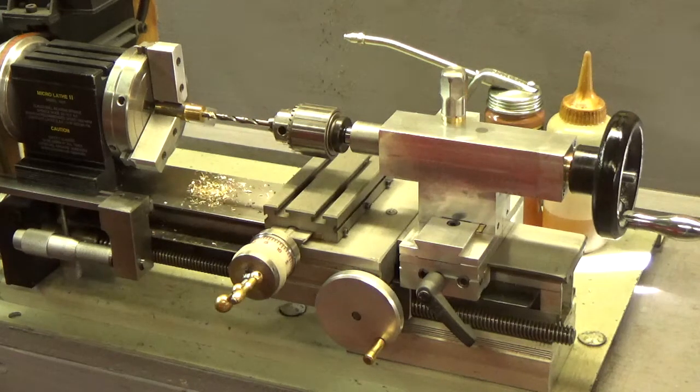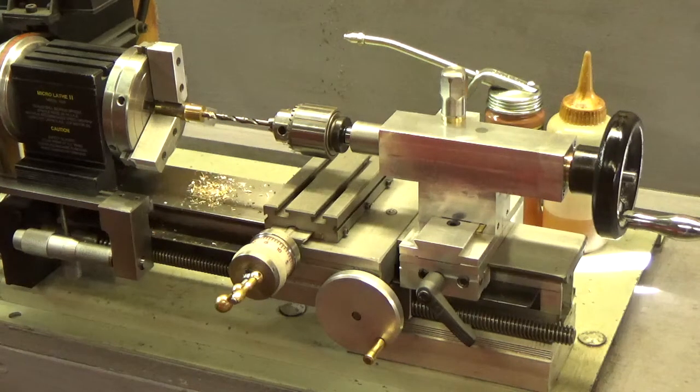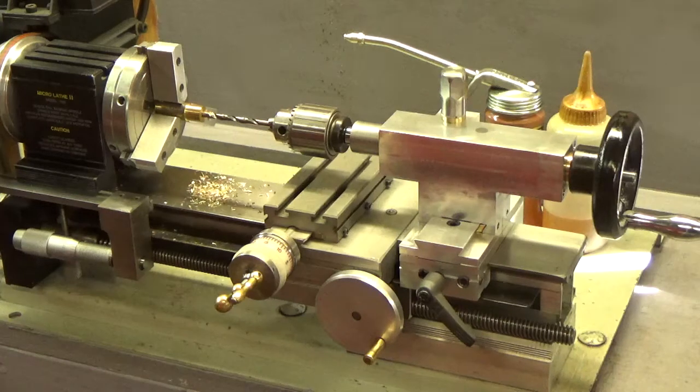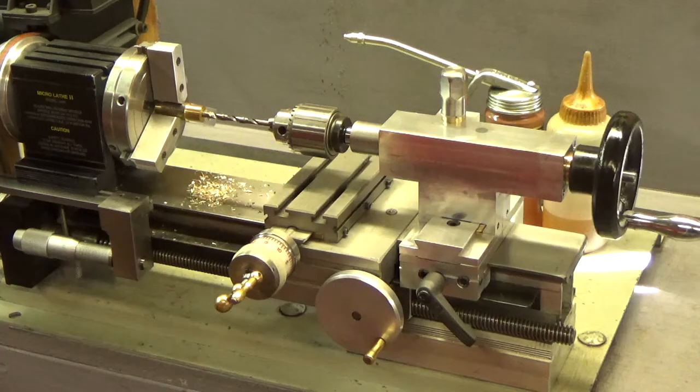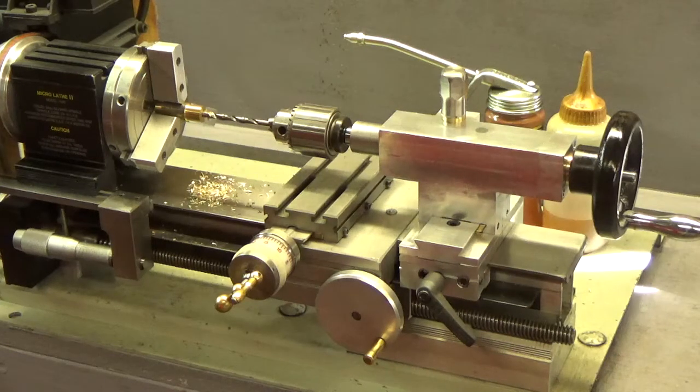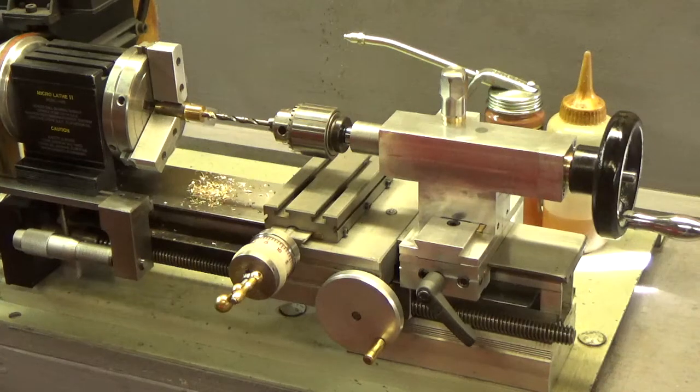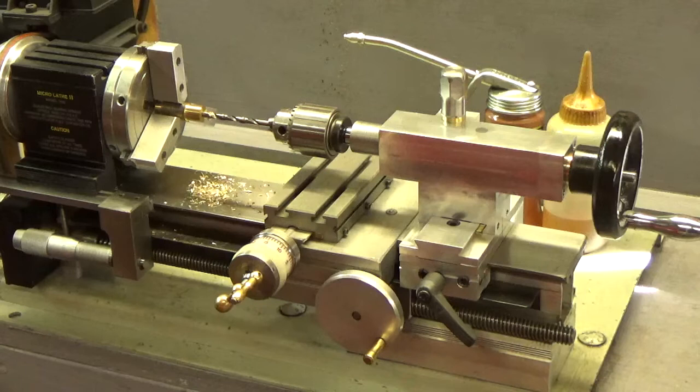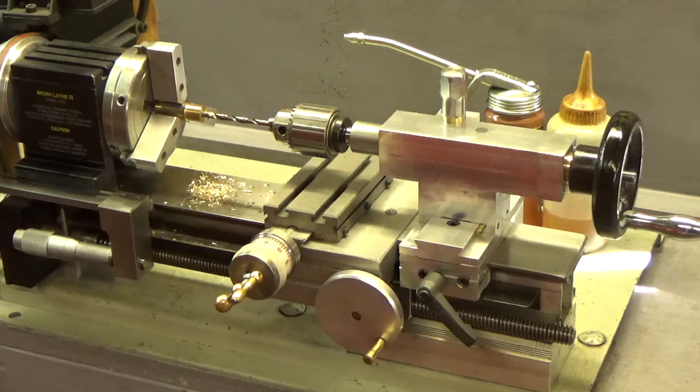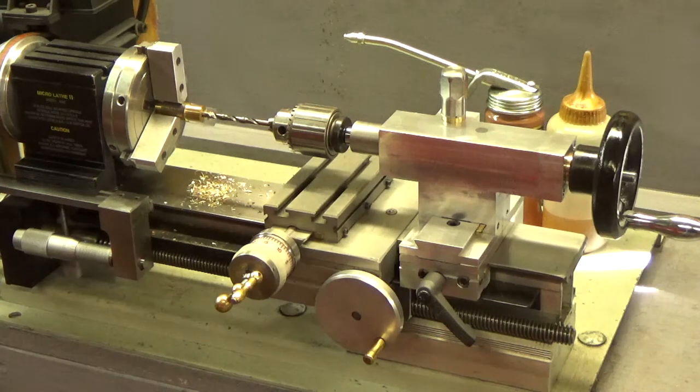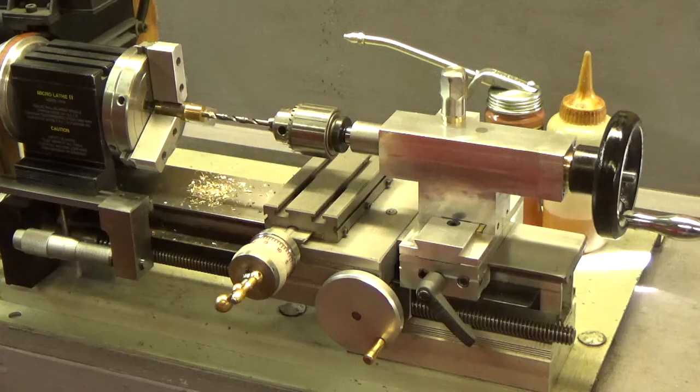Some of them do. This particular one that holds the chuck, it's got a tang on it, so it ejects no problem. I didn't realize it before but I actually had a bunch of MT1 centers and stuff for this lathe because I made an adapter to go in the old tailstock that extended out over the carriage, and that adapter had MT1 taper in it.